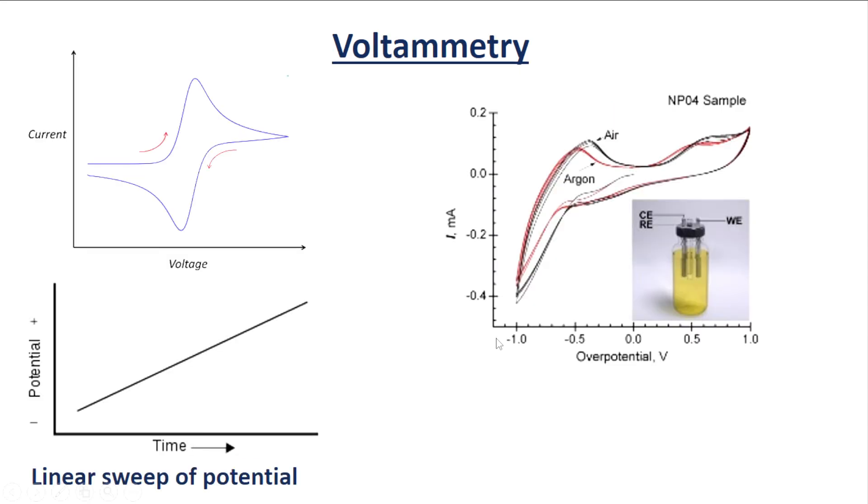In voltammetry, information about an analyte is obtained by measuring the current as potential varies. The analytical data for the voltammetric experiment comes in the form of a voltammogram, which plots the current produced by the analyte versus the potential of the working electrode.